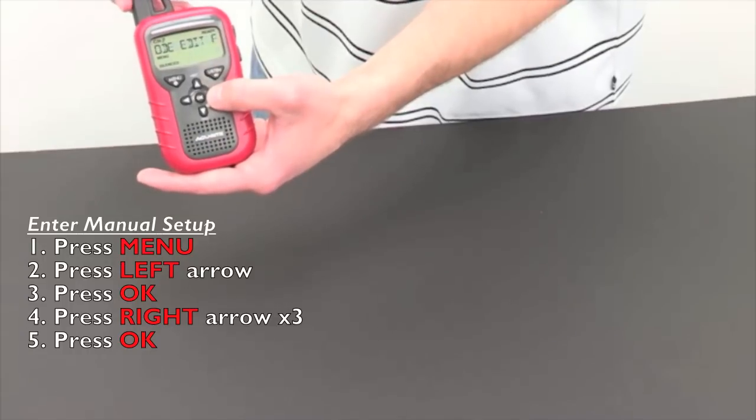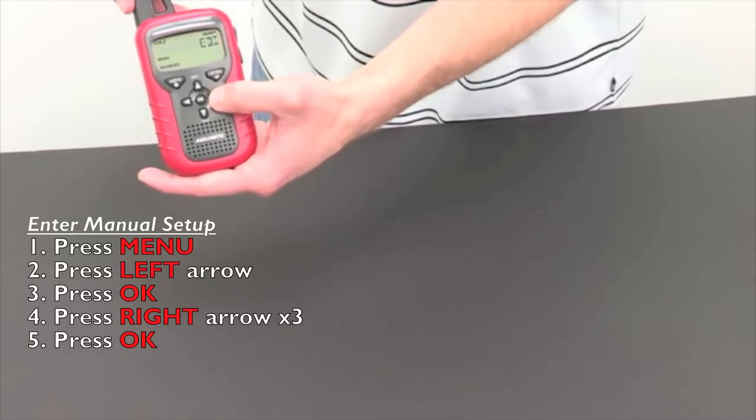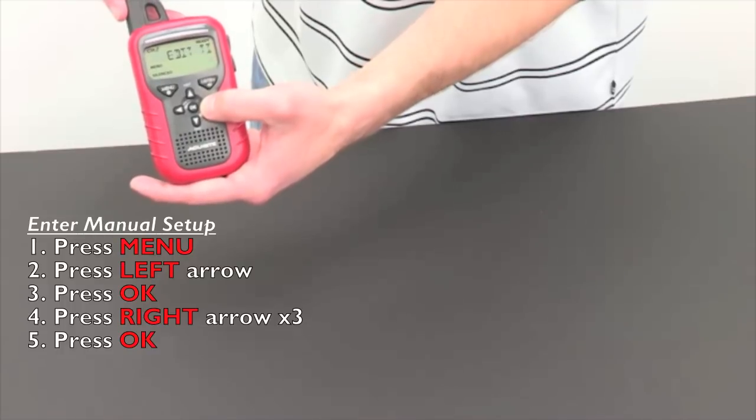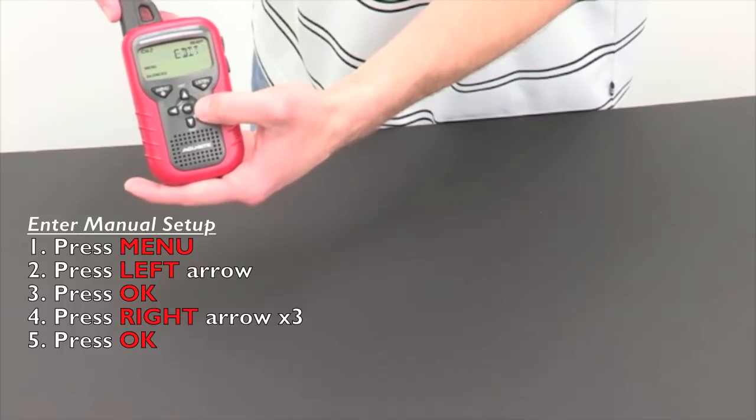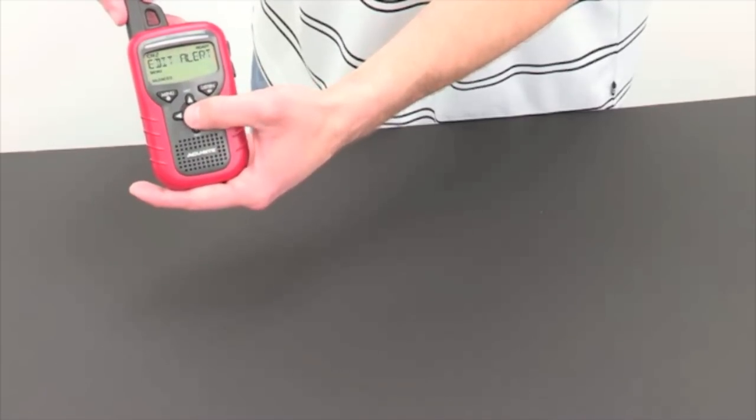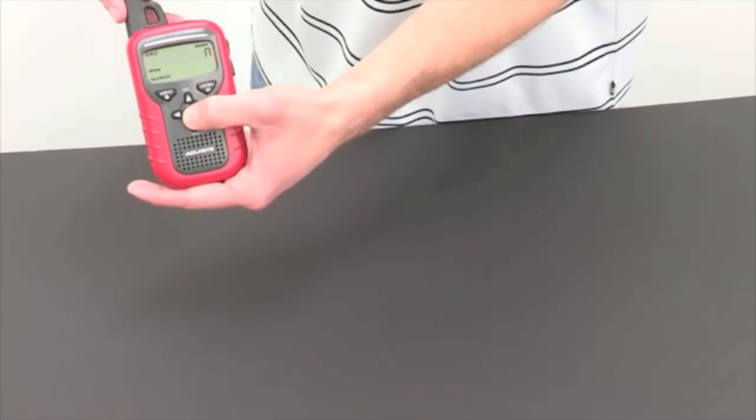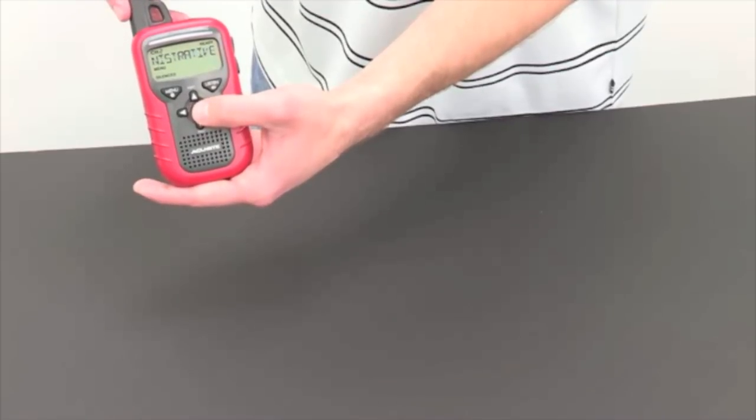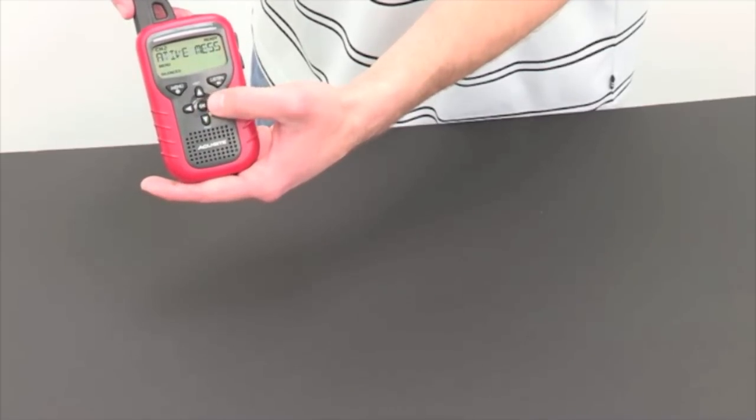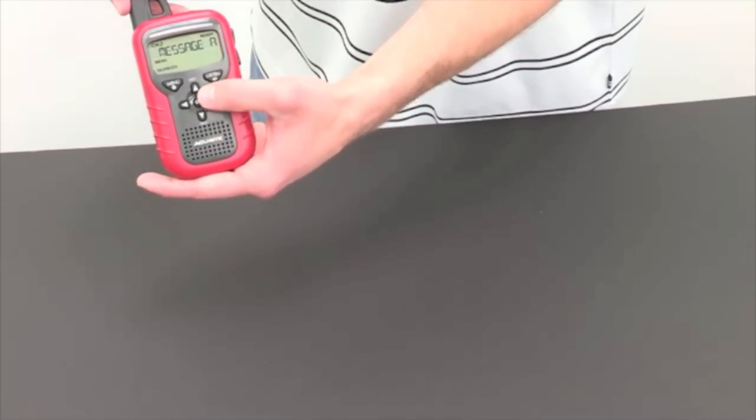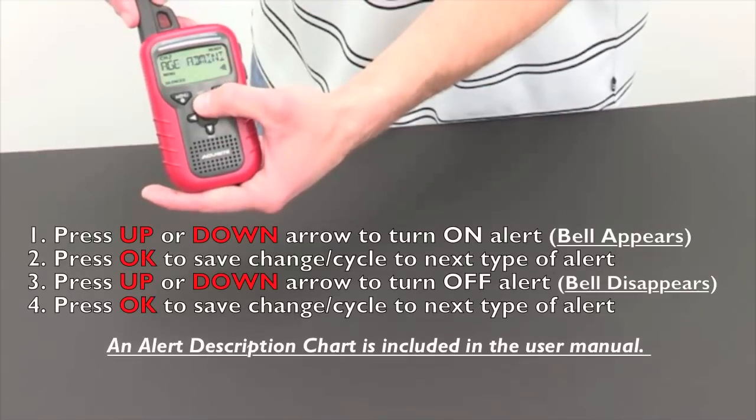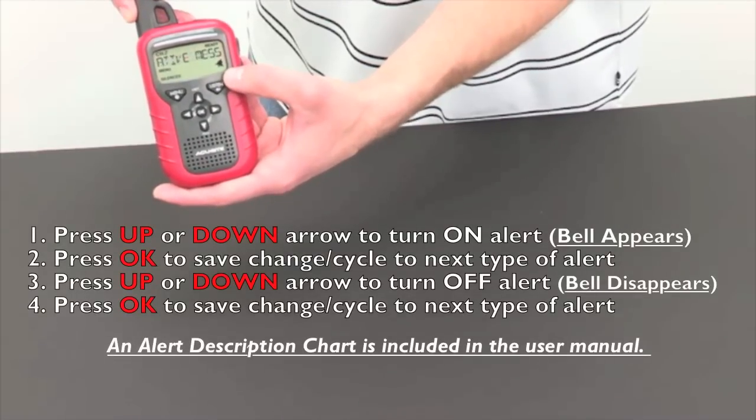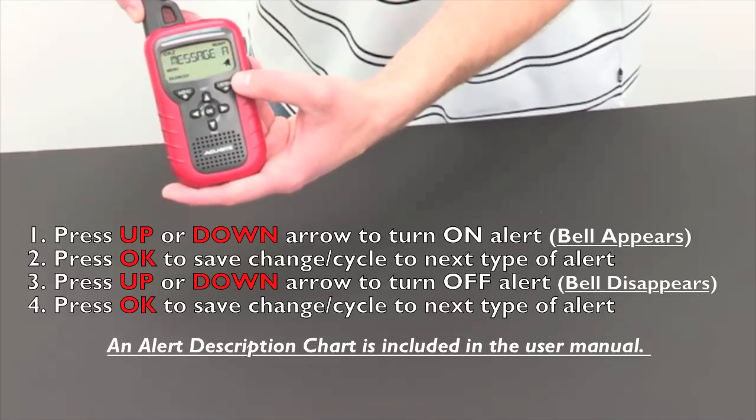Now we will cycle to edit the alerts. Press the right arrow until it comes across the screen. Press ok. You are prompted with the first type of alert. Administrative messages are off by default. To turn these on, press the up or down arrow. And as you will see, it adds the bell icon at the bottom of the screen. This notifies you that the alert is activated.